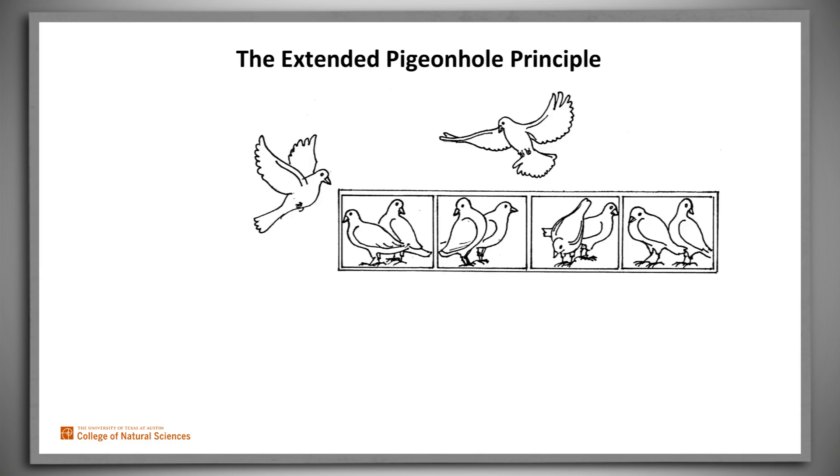We've just seen an example of the extended pigeonhole principle. There were four chairs and ten, greater than two times four, students. So even if we fill every chair with two students, someone will be left over. There is at least one chair with more than two students.